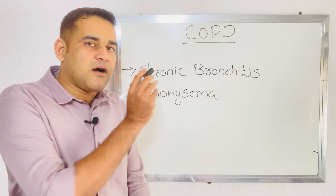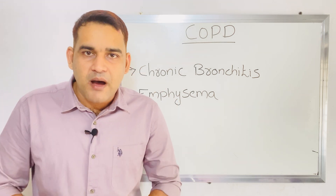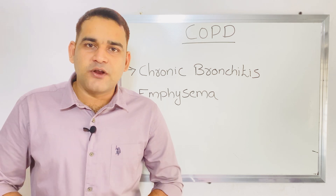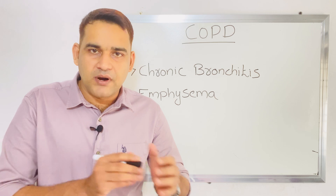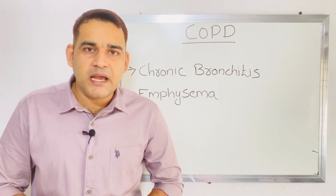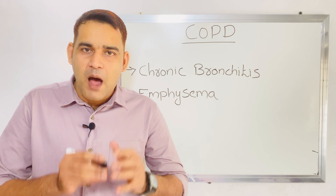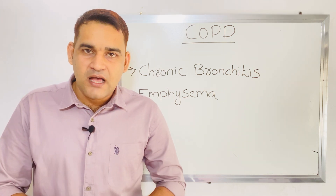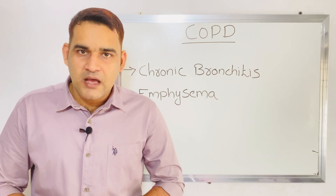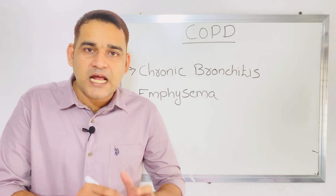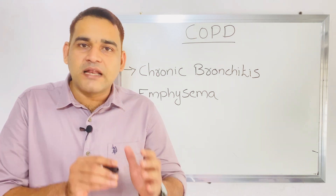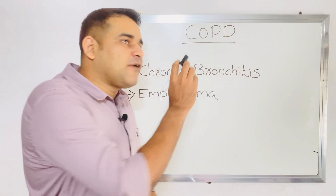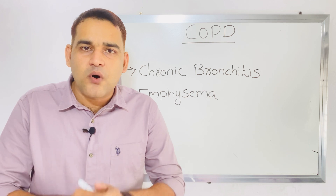Regarding emphysema — what is meant by emphysema? Emphysema means abnormal permanent enlargement of air spaces at the level of alveoli. Keep it in mind: emphysema means abnormal permanent enlargement of air spaces at the level of alveoli. For chronic bronchitis, you can define it as inflammation of the bronchial tubes.